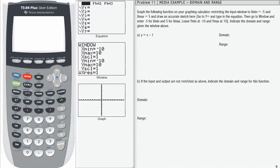In problem 11, we're asked to graph a function on our calculator and restrict the input window to some specific values. Then draw a sketch on our paper and indicate the domain and range using those restricted values.